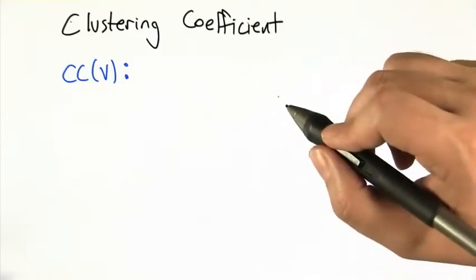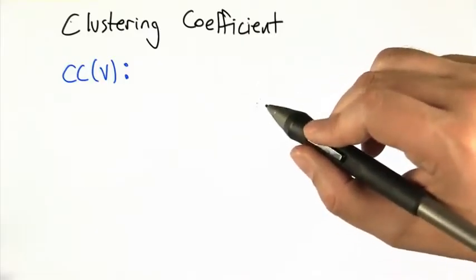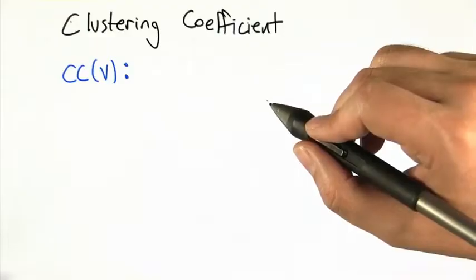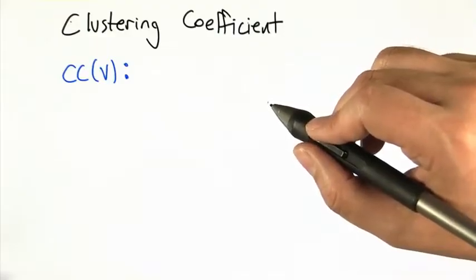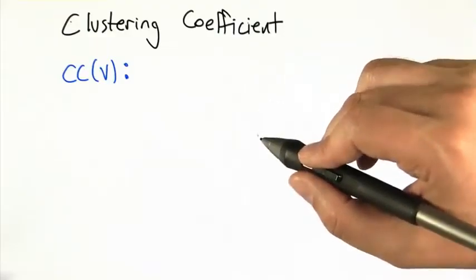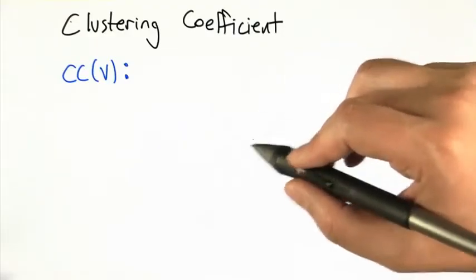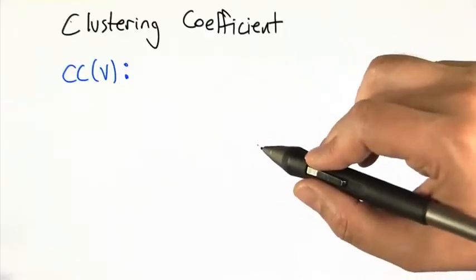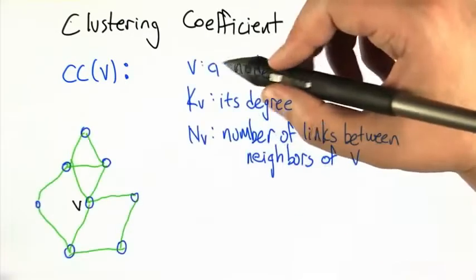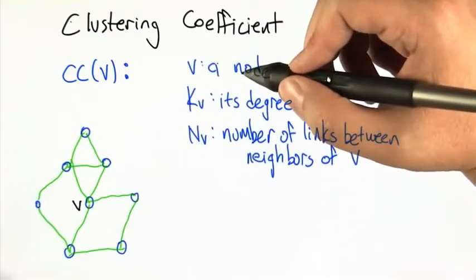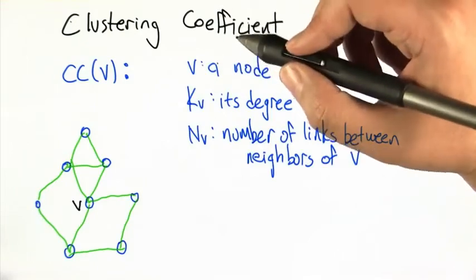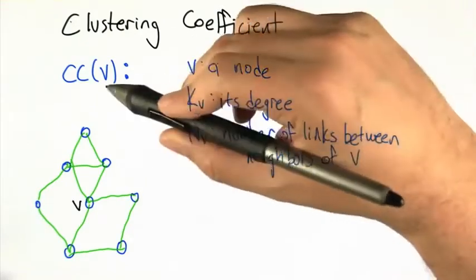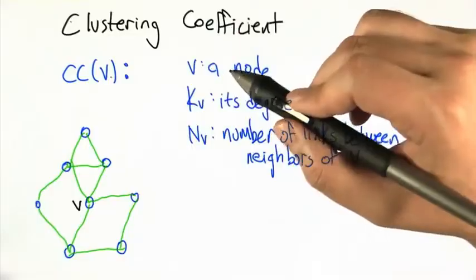What the clustering coefficient is trying to capture is cliquishness — how likely is it that two nodes that are connected are part of some kind of larger, highly connected group of nodes? One typical way of defining the clustering coefficient is to start off by talking about the clustering coefficient for a particular node in a graph.